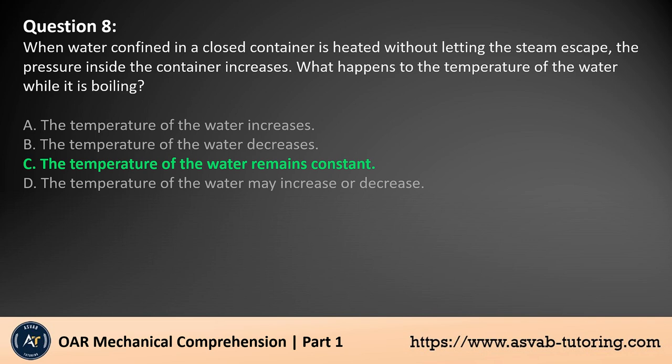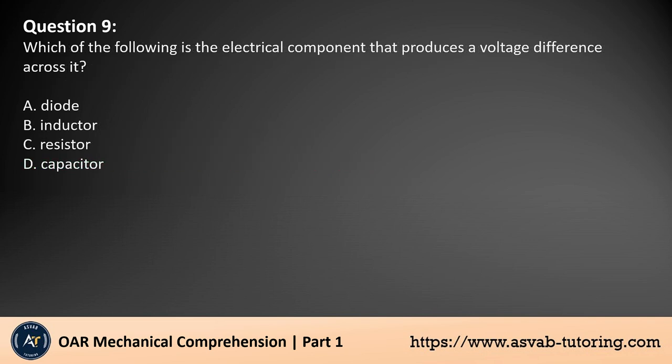The answer is C. When water boils, its temperature remains constant despite continued heating, as the added energy is used to convert the liquid into steam, not to raise the temperature. However, in a closed container where steam cannot escape, pressure increases as more water turns to steam, which can raise the boiling point, but the temperature remains constant during the phase change itself.